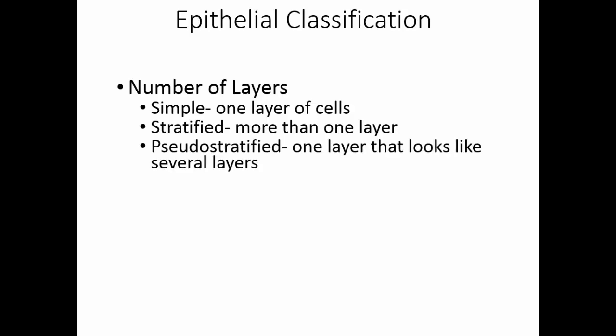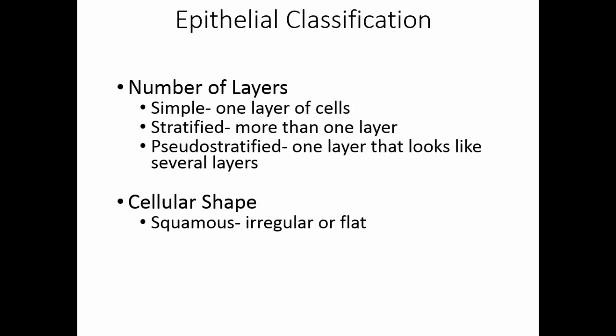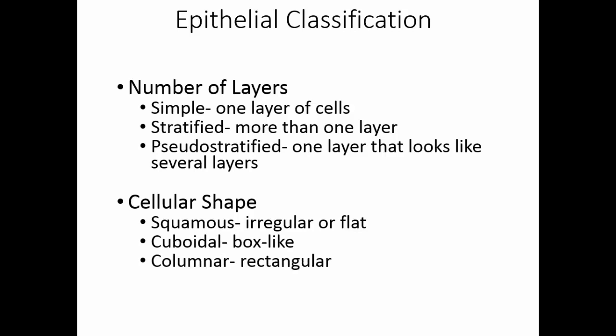We also have the classification of pseudostratified. Pseudostratified epithelium is only one layer of cells, but because of the arrangement of the nuclei, it looks like there are more than one layer. The other classification is based on cellular shape. Squamous cells are irregular in shape and somewhat flattened. Cuboidal cells are box-like, and columnar cells have a rectangular shape.